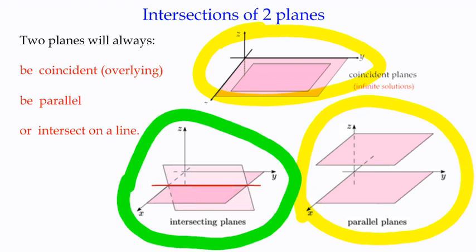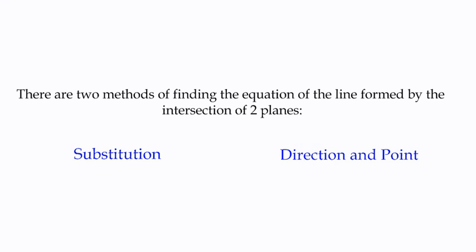Now, interestingly, there are two methods in order to do that, to get the equation of the line, and I'm going to use them in two separate examples, example 21 and example 22. Both of them generate the correct answer, but they take a different approach to it. Just to clarify, there are two different methods of finding the equation of the line.